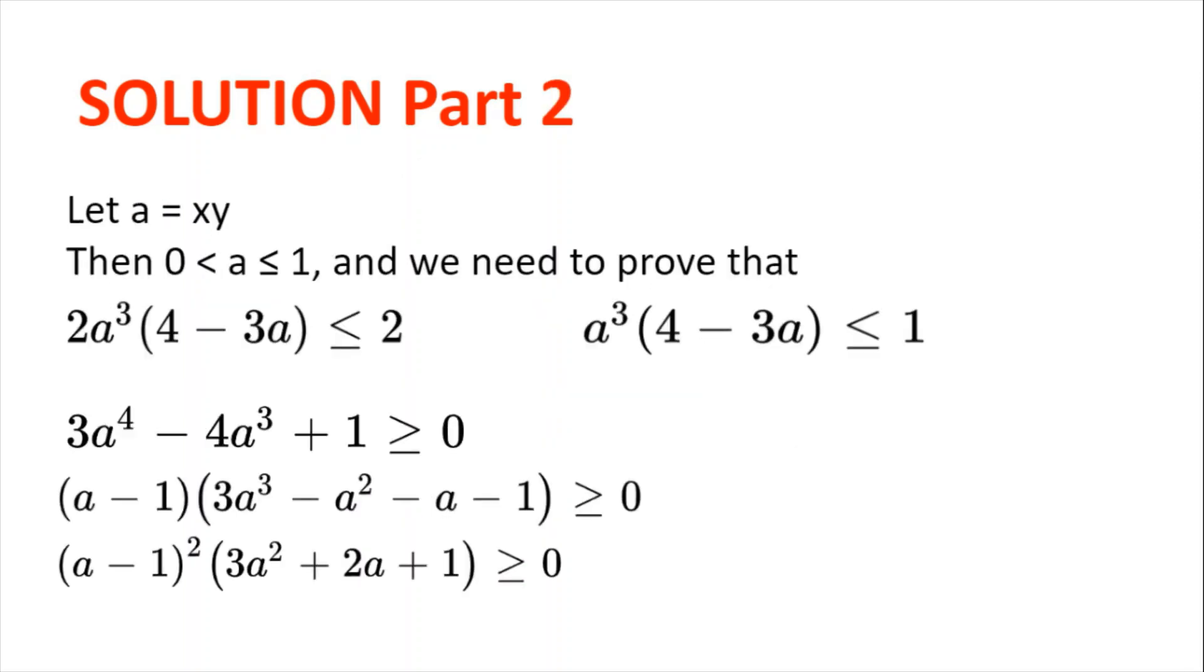Now, let a = xy. Then 0 < a ≤ 1, and we need to prove that 2a³(4 - 3a) ≤ 2. We just rewrote the left hand side of the initial inequality.